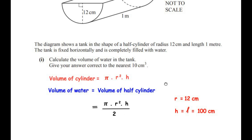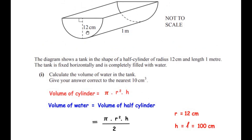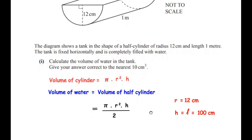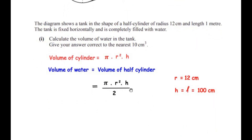The radius is given as 12cm, so r = 12. The height or length of the cylinder is 1m. Since the volume is asked in cubic centimetres, we convert 1m into 100cm. Now we substitute the values: π × 12² × 100 / 2.